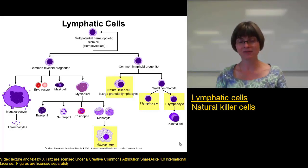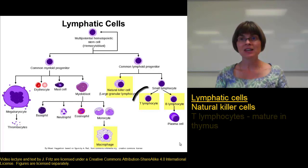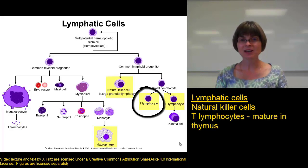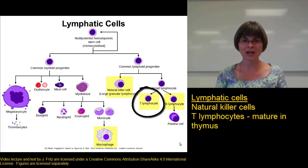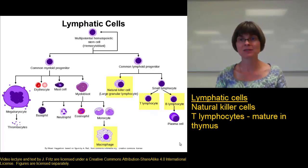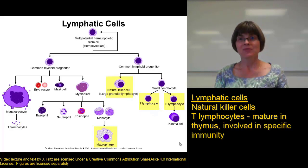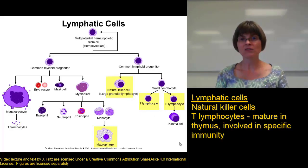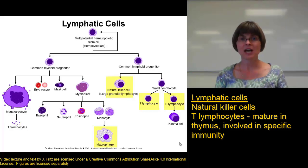The T lymphocytes are called T lymphocytes because they mature in the thymus. They begin in the bone marrow, but then they migrate to the thymus and grow and mature there. There are several types of these that are all involved in specific defense in immunity, and we'll get into them more in the immune system section.